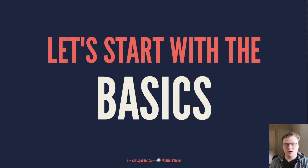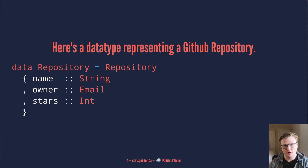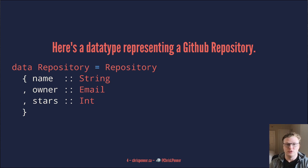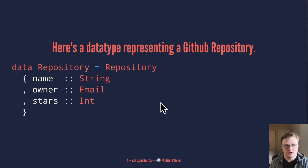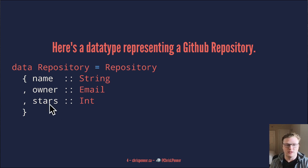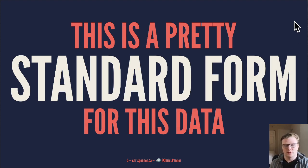Let's start with the basics. I'm doing this talk in Haskell using Haskell idioms and syntax, but you can apply this concept to most languages that have higher-kinded types — feel free to translate to your language of choice. We'll start with a data type representing a GitHub repository: a regular Haskell record with three fields — a name (string), an owner (a custom email type), and the number of stars.